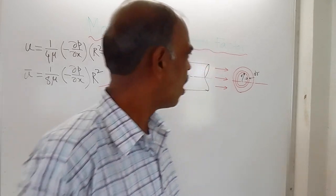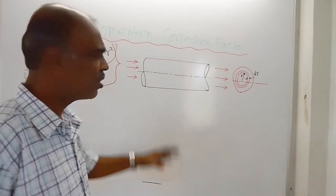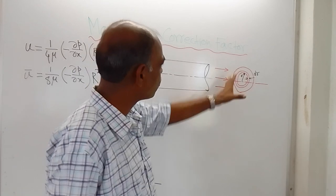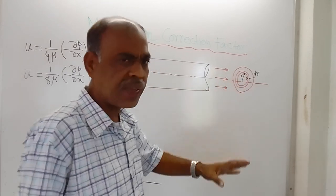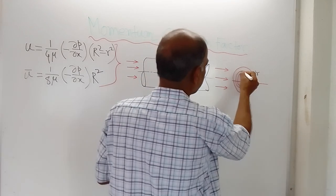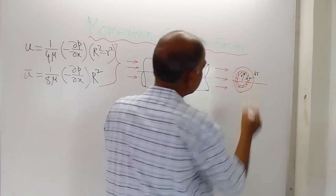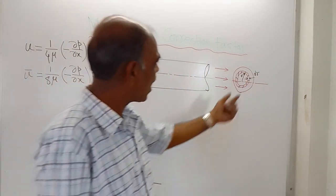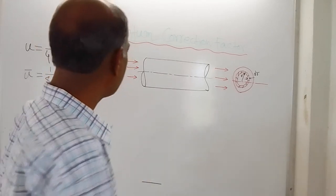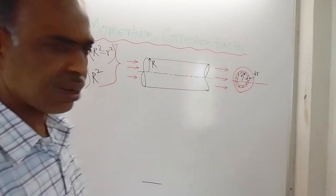So first you calculate momentum using only average velocity, then multiply by the momentum correction factor to get the actual momentum. The starting point is to draw a sketch. I have taken one cylindrical pipe — this is a side view. I have taken one ring element. The radius of this ring is small r, thickness is dr, and the radius of the pipe is capital R.